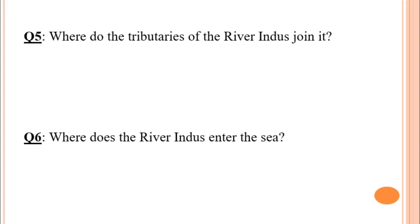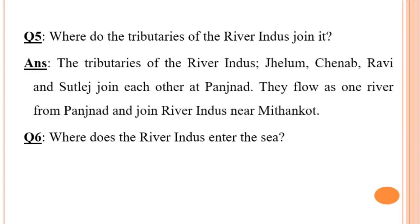Question number five: where do the tributaries of the River Indus join it? For this question you can take help from the topic 'The Landscape of Pakistan' on page number 9. The tributaries of the River Indus are River Jhelum, River Chenab, River Ravi, and River Sutlej. These tributaries join each other at Panchnad, flow as one river from Panchnad, and join River Indus near Mithankot.